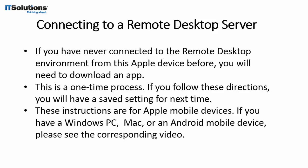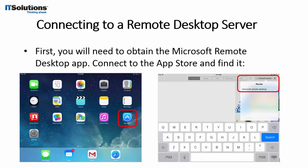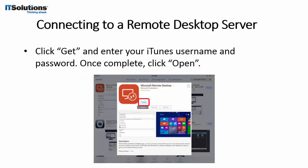If you have never connected to a remote desktop server from this device before, you will need to download an app. If you already have the Microsoft Remote Desktop app, you can skip this step. Open the App Store by clicking on the blue A icon. On an iPad, tap on the search function in the top right corner. On an iPhone, the search function is located in the shortcut bar on the bottom of the screen. Search the App Store for the words Microsoft Remote Desktop. The first search result should be the app you see below with the orange icon. Tap the Get or Free button next to this icon. You will be asked for your iTunes password. After you enter it, the app will download, which may take a minute or two. Once it is complete, there will be a new icon on your home screen. Tap it to open the app.